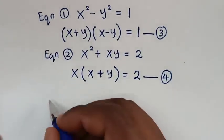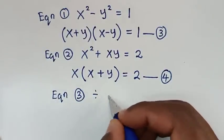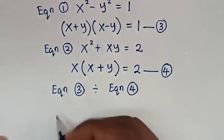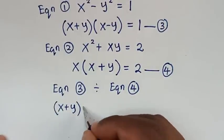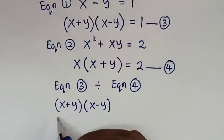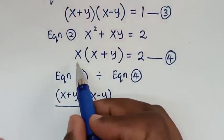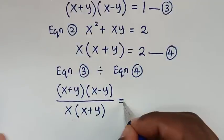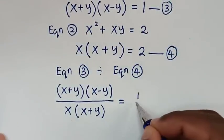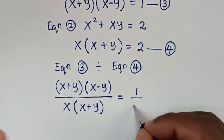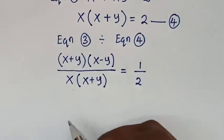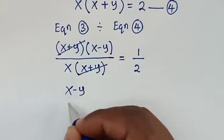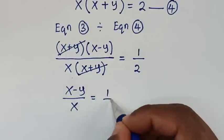Then in the next step, we divide equation 3 by equation 4. From equation 3, the left side is (x + y)(x - y), divided by equation 4, whose left side is x(x + y), equal to 1 over 2. To simplify, (x + y) cancels with (x + y), leaving (x - y) over x equal to 1 over 2.